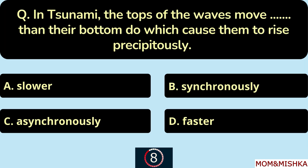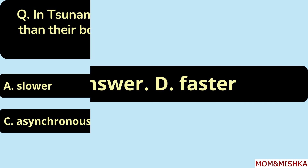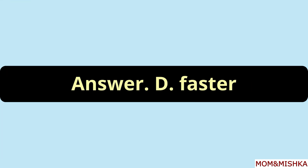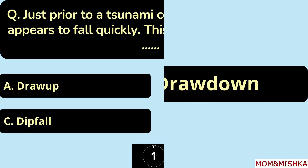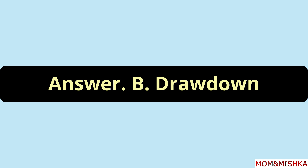In a tsunami, the tops of the waves move faster than their bottoms do, which causes them to rise precipitously — option D. Just prior to a tsunami coming ashore, sea level appears to fall quickly. This phenomenon is called drawdown — option B.